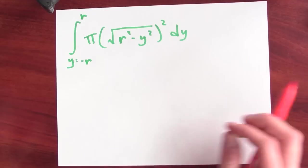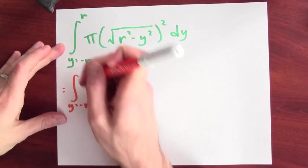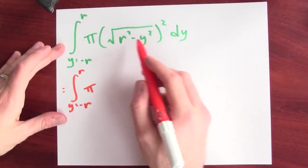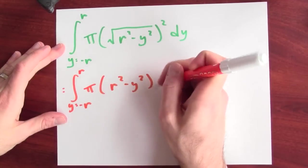Now, we can integrate. First, I'll simplify the integrand. This is the integral, y goes from minus r to r of pi times the square root squared. It's just r squared minus y squared dy.